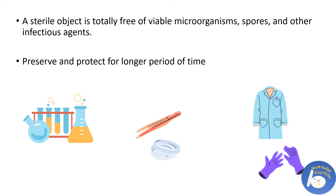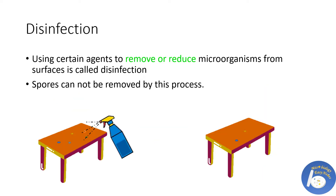Disinfection is different from sterilization. All disinfecting agents just reduce or remove the microorganisms from the surface; these agents are not capable of removing all forms of microbes like spores from the surface. Inanimate objects like tables, working benches, and rooms are disinfected by disinfectants.